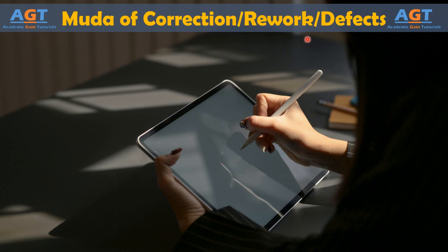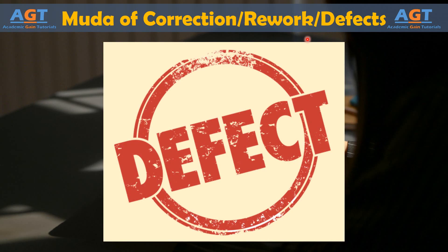Correction is also known as muda of rework, or the waste incurred in correcting defects. This form of waste often plagues organizations that are keen on traditional quality programs. In a desire to eliminate defects from the end product, organizations institute in-process quality checks that route work with defects back for correction. While rework might be necessary in some cases, it is still waste in the process that should be identified and analyzed. When rework occurs, it increases overall process time and uses additional labor and materials to create a smaller amount of products or outputs.